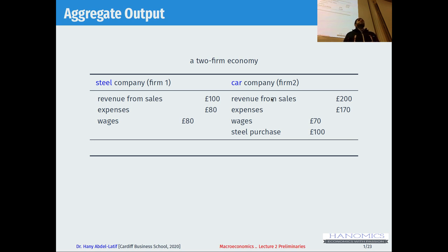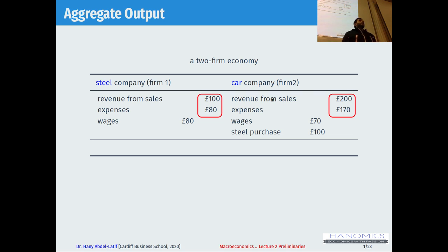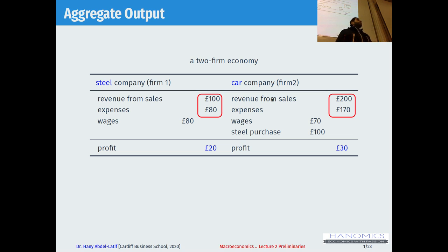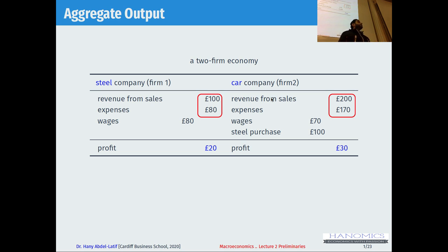How much profit do these firms make? You just subtract: £100 from firm one minus £80 gives us £20. Revenue minus expenses gives you how much profit they make. So what is the GDP here? What is the aggregate output in this economy where we assume there are only two firms? Is it the total output of £100 revenue from firm one and £200 from firm two — does that make it £300 GDP in this country in this given year?